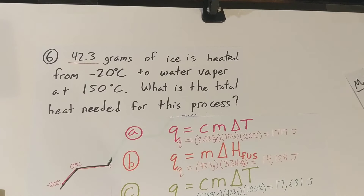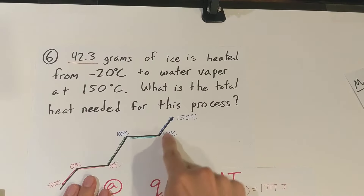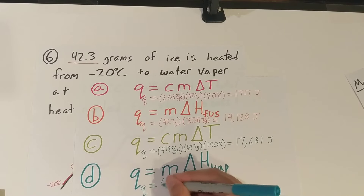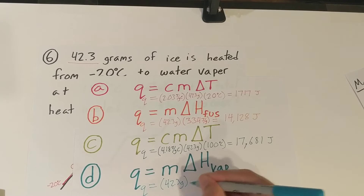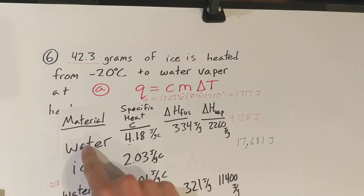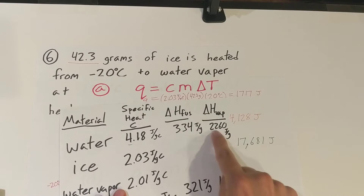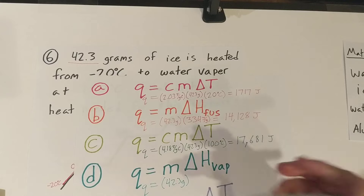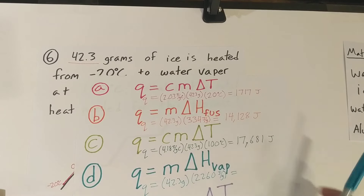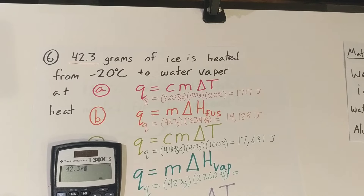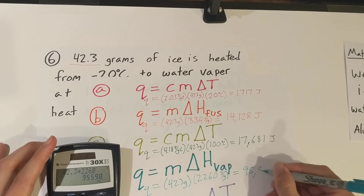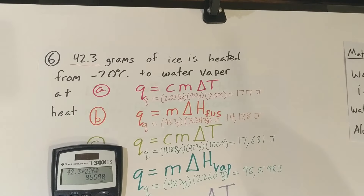Now our water is at 100 degrees and we need to boil it into a gas. That's where enthalpy of vaporization comes in. Q equals mass times enthalpy of vaporization. Mass is 42.3 grams. From the table, the enthalpy of vaporization of water is 2,260 joules per gram. 42.3 times 2,260 equals 95,598 joules.